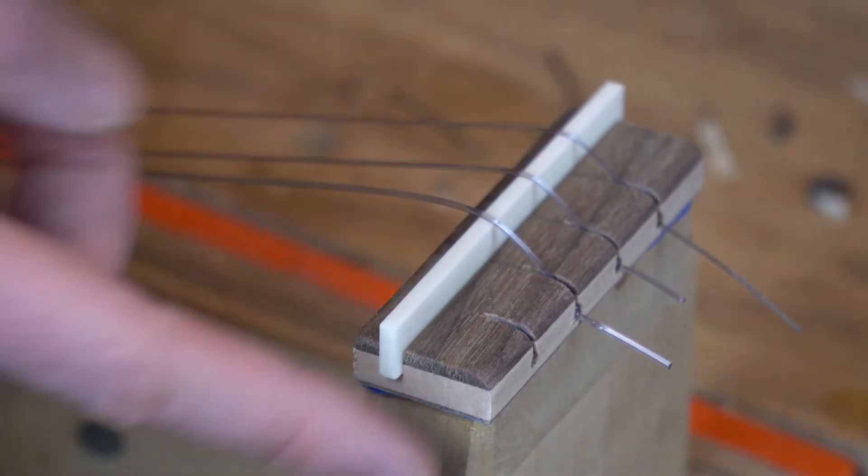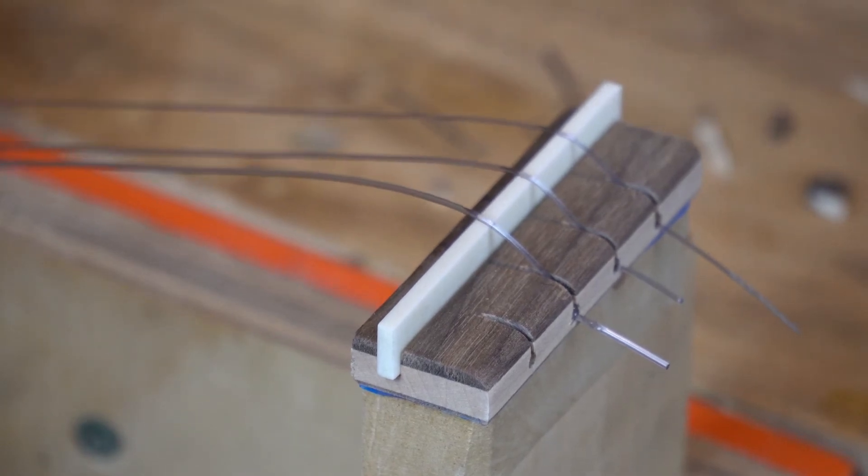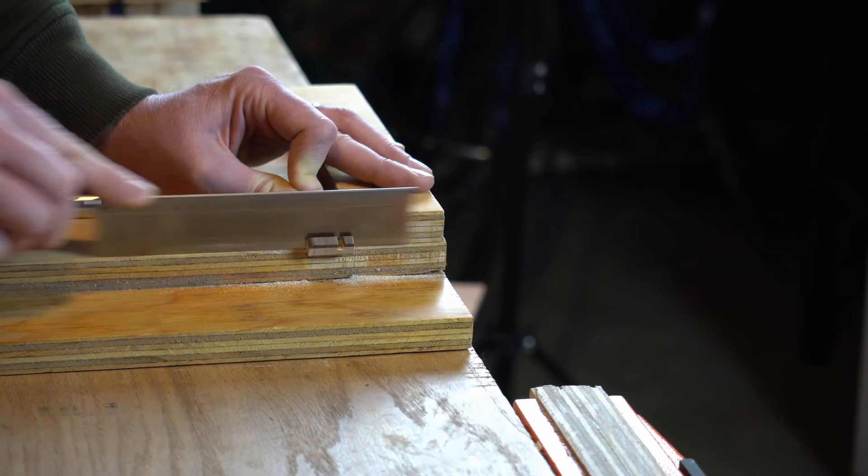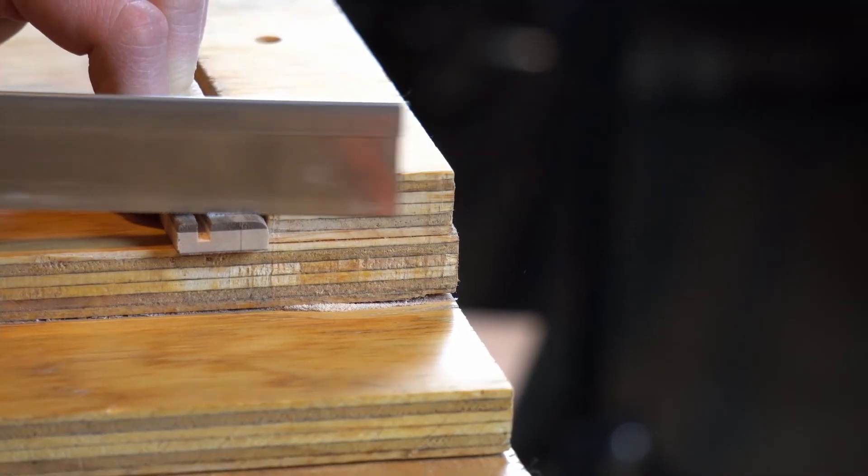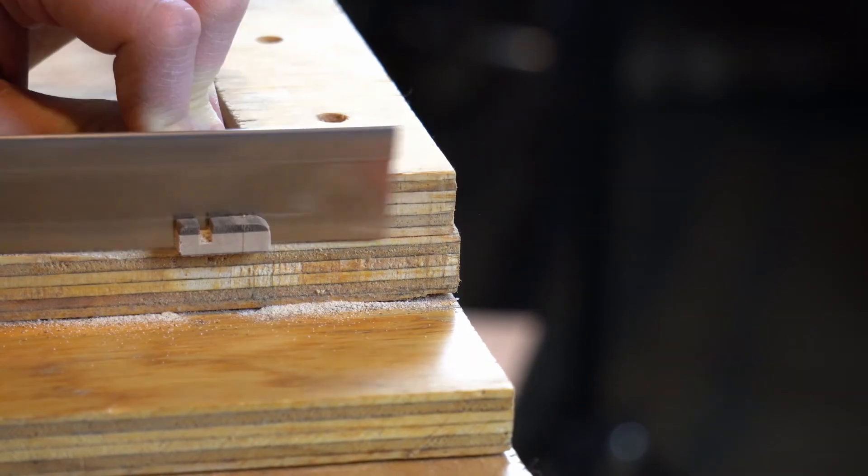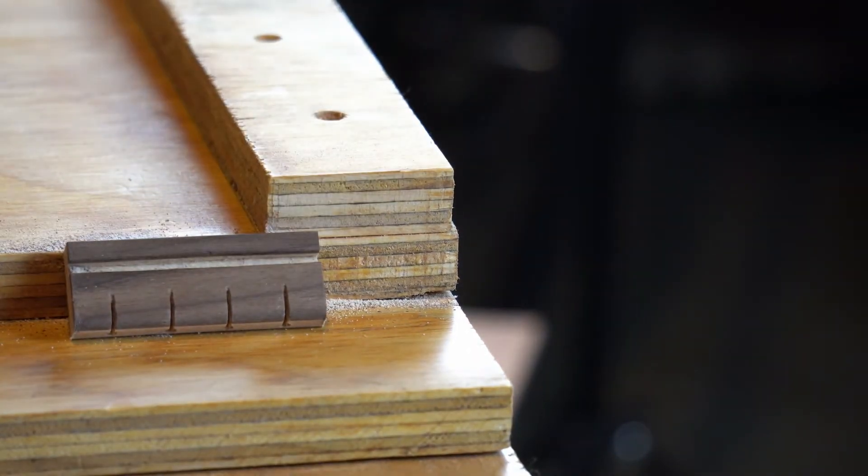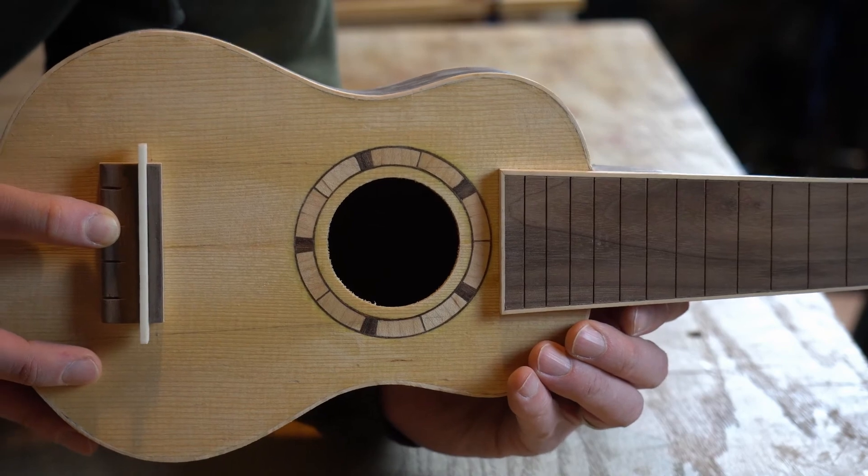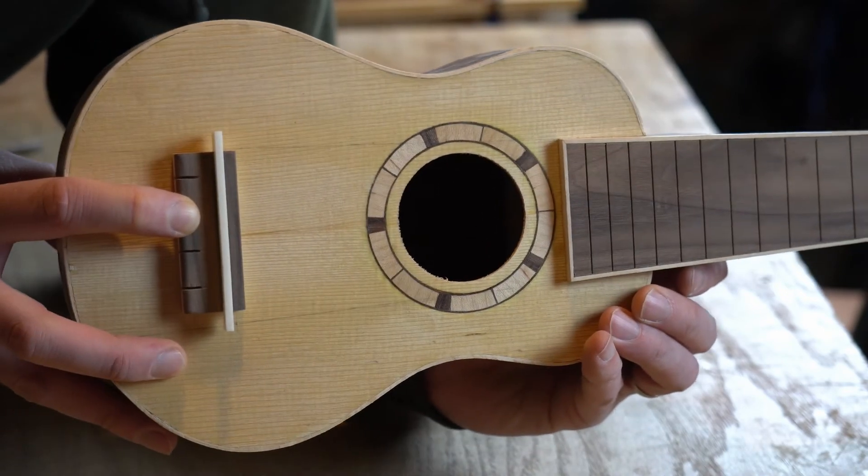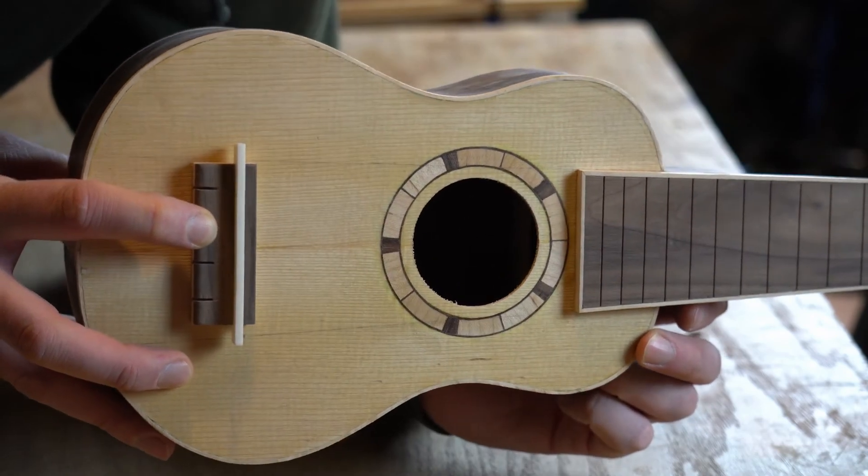Once it's trimmed up, let's sand it a little bit more and it'll be done. So that's what it should look like. Obviously the saddle will be trimmed down to width, but I think this is ready to go as soon as we have the soundboard prepped.